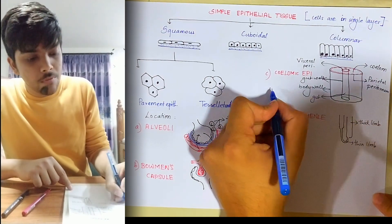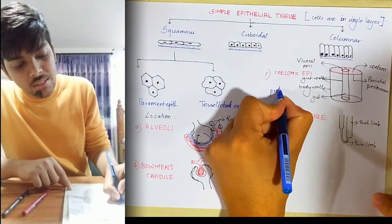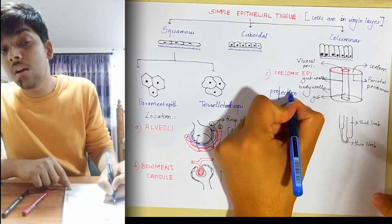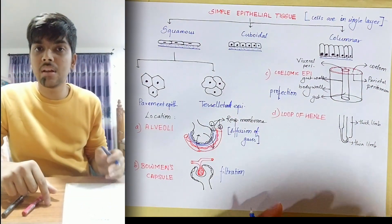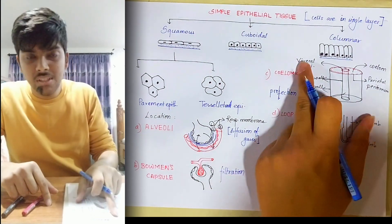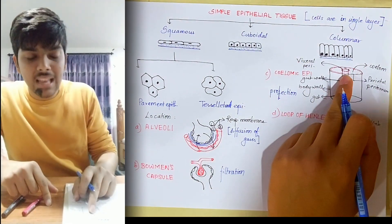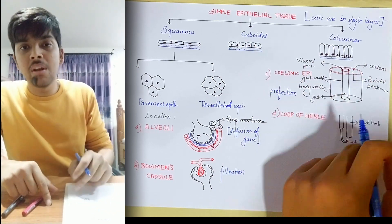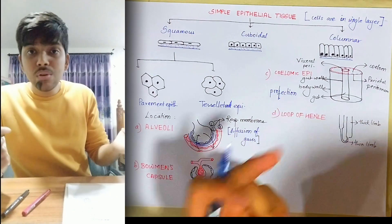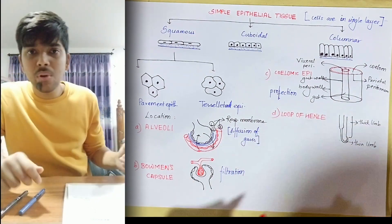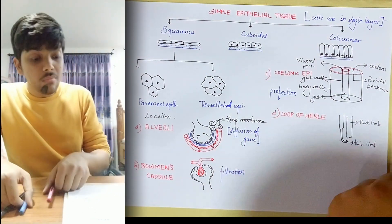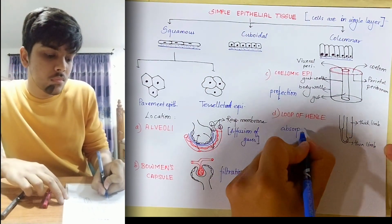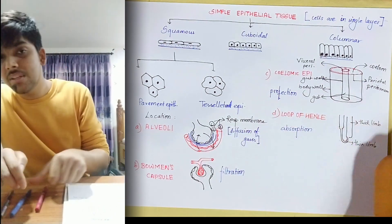The function of the coelomic epithelium is protection, because it forms the lining for visceral organs — the visceral peritoneum lines your visceral organs and the parietal peritoneum lines them from outside, so it acts as a protective membrane. For the loop of Henle, the function is absorption, which is part of urine formation as well.